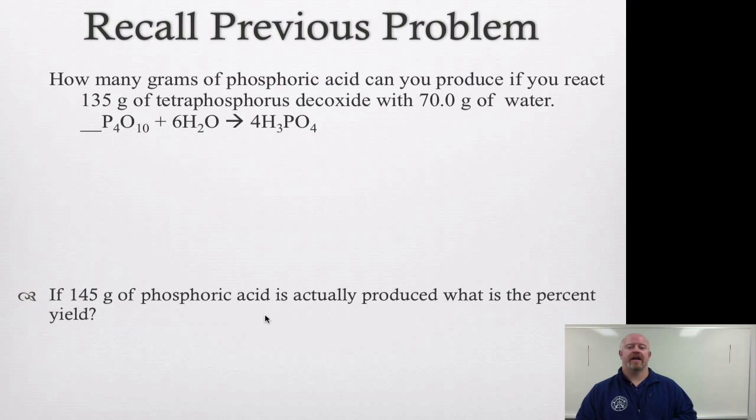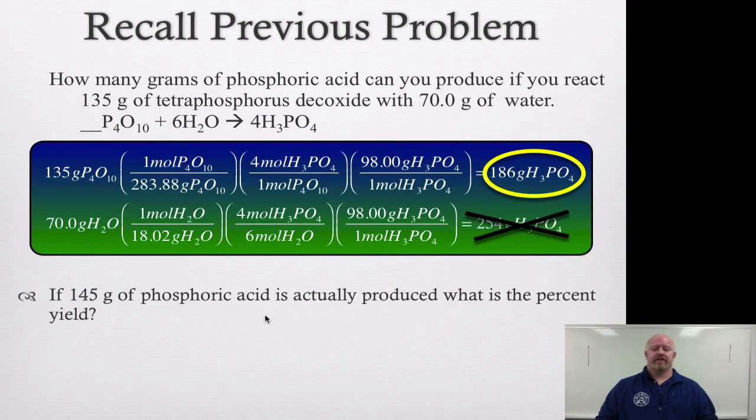So what we're going to do is take a look at this previous problem that we did and then add the concept of percent yield into it. If you remember, we worked on this problem with limiting reactant. We said that if we react 135 grams of tetraphosphorus decoxide with 70 grams of water, we find out that our limiting reactant is actually the tetraphosphorus decoxide. So this is our limiting reactant. The amount of phosphoric acid we can make is 186 grams. The excess reactant, the water, could make too much, so we cross that out. Now what happens if we run the experiment and 145 grams of phosphoric acid is actually produced? What is our percent yield if we really made 145 grams of that process?